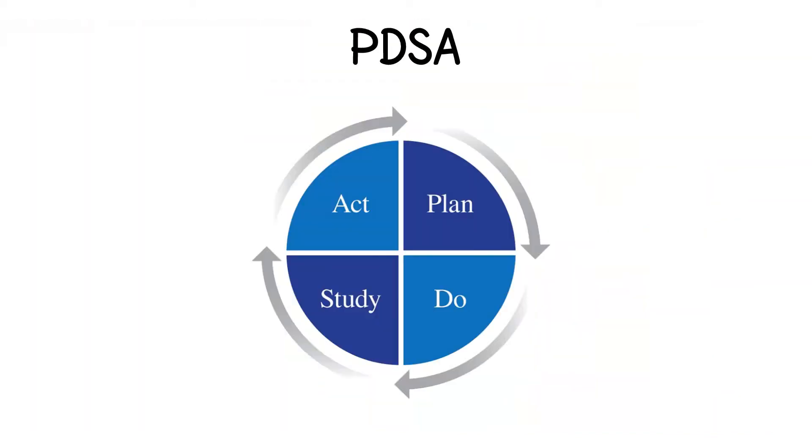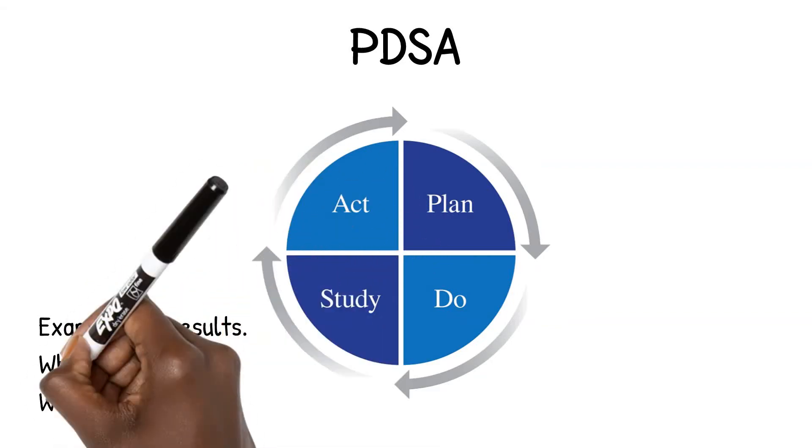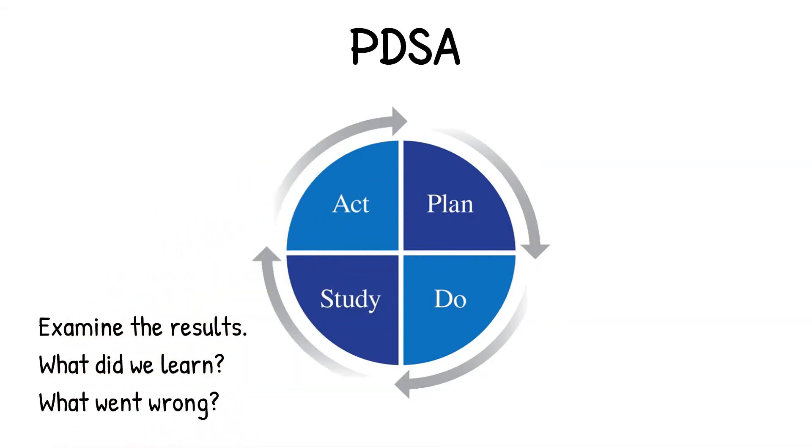During the study stage of the cycle, you want to analyze your observational and process data to assess the impact of the change and determine the level of success achieved compared to your project goal. You will summarize the lessons learned and determine the changes that need to be made in the future to continue to drive improvements.